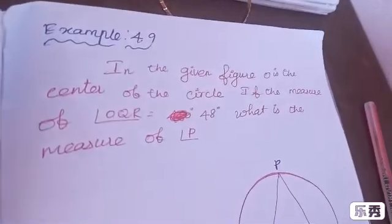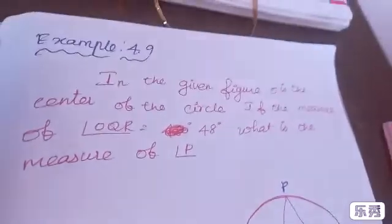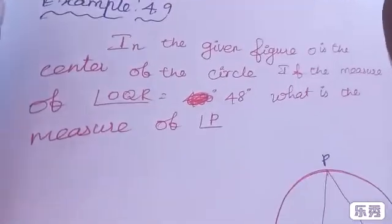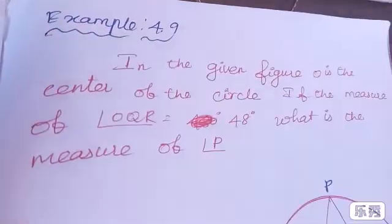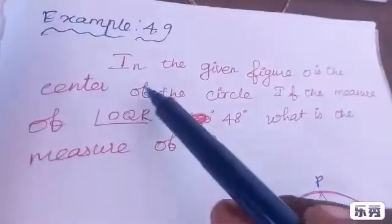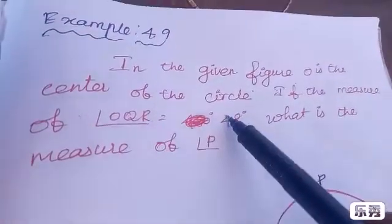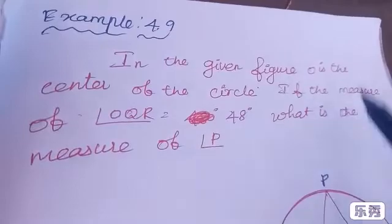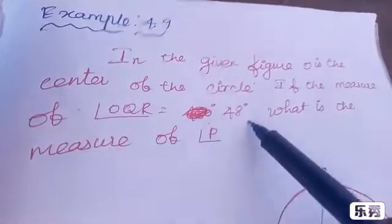Hi students, welcome to Best Mathematics, class 9th chapter 4. Example 4.59: in the given figure, O is the center of the circle. If the measure of angle OQR is equal to 48 degrees, what is the measure of angle P?